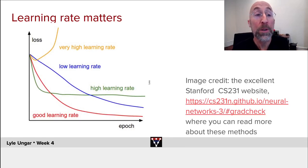It should be obvious that learning rate matters. If you have too high a learning rate, then as you iterate and do your gradient descent, the gradient descent tends to actually bounce you farther and farther away, and the weights diverge.